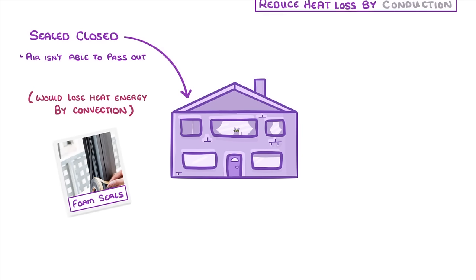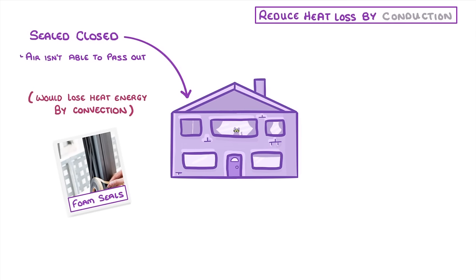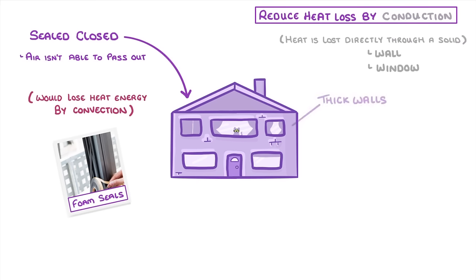Second, we need to reduce heat loss by conduction, which is when heat is lost directly through a solid, like a wall or a window. To achieve this, houses tend to have thick walls that are made from materials with a low thermal conductivity, which means that they don't conduct heat very well.